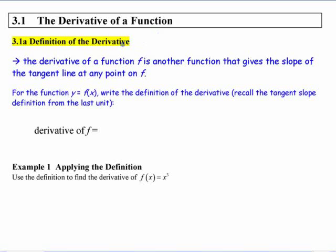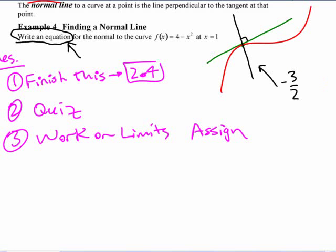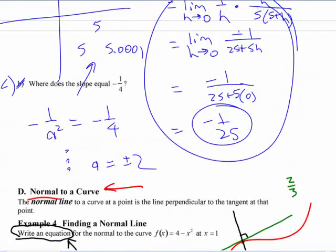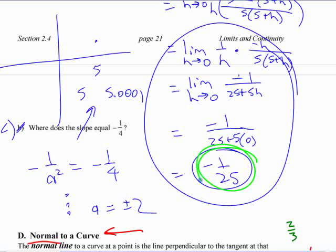The derivative of a function is the slope of the tangent line. The derivative of a function is a function that gives the slope of the tangent line at any point.